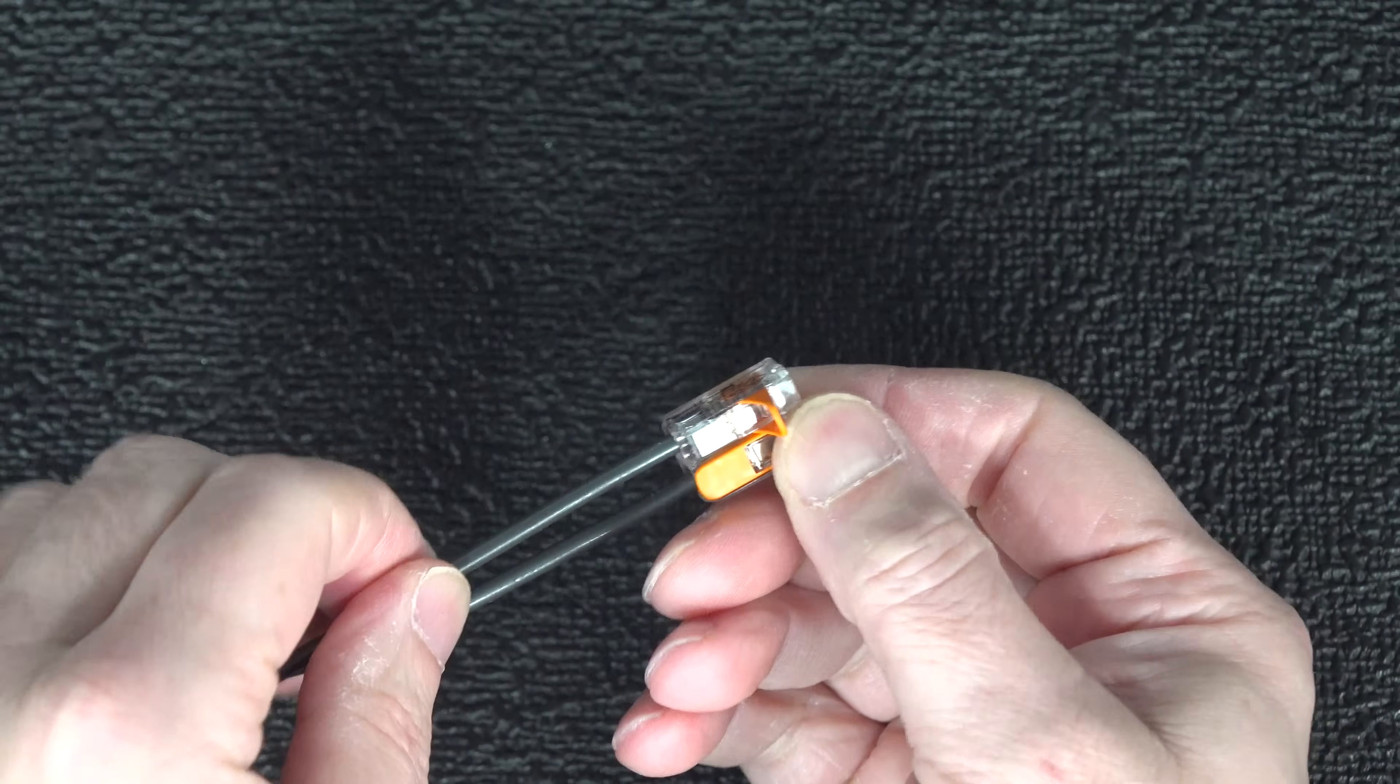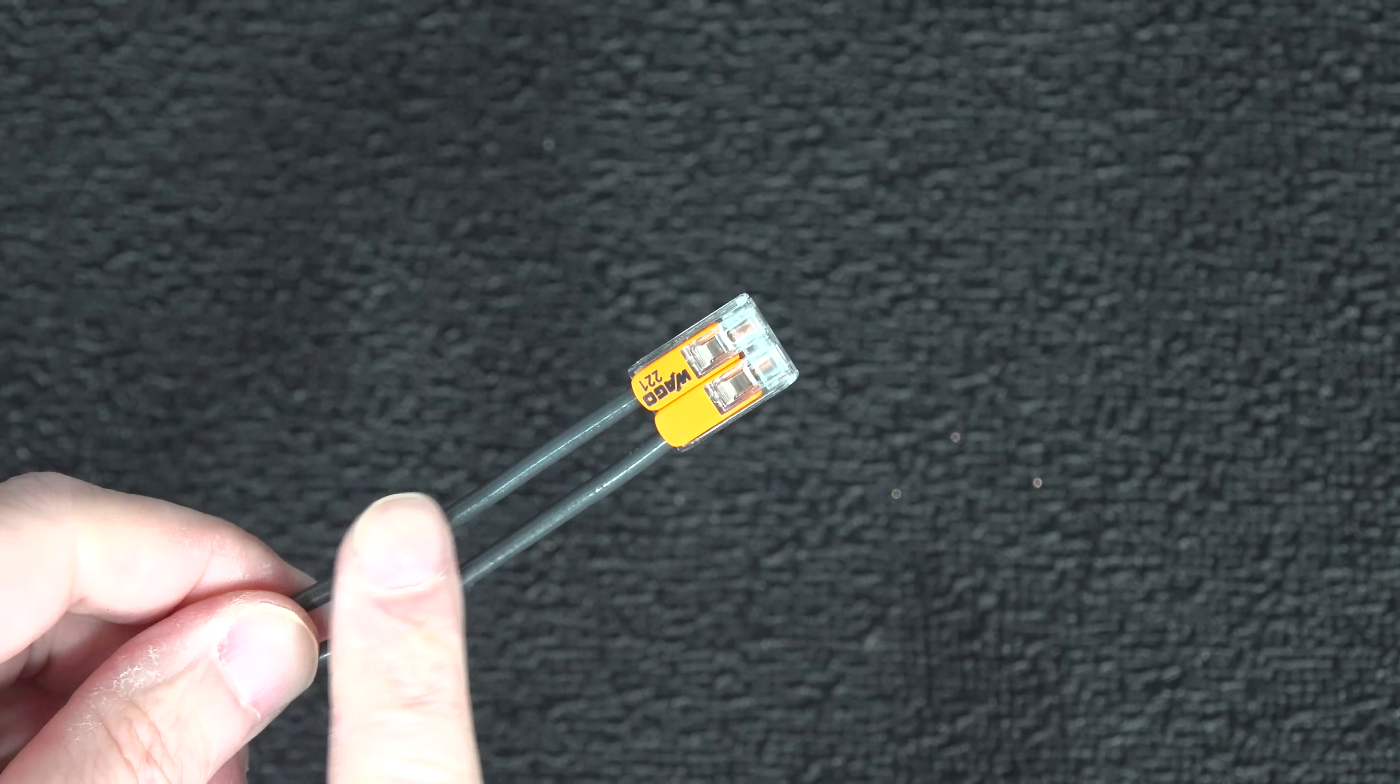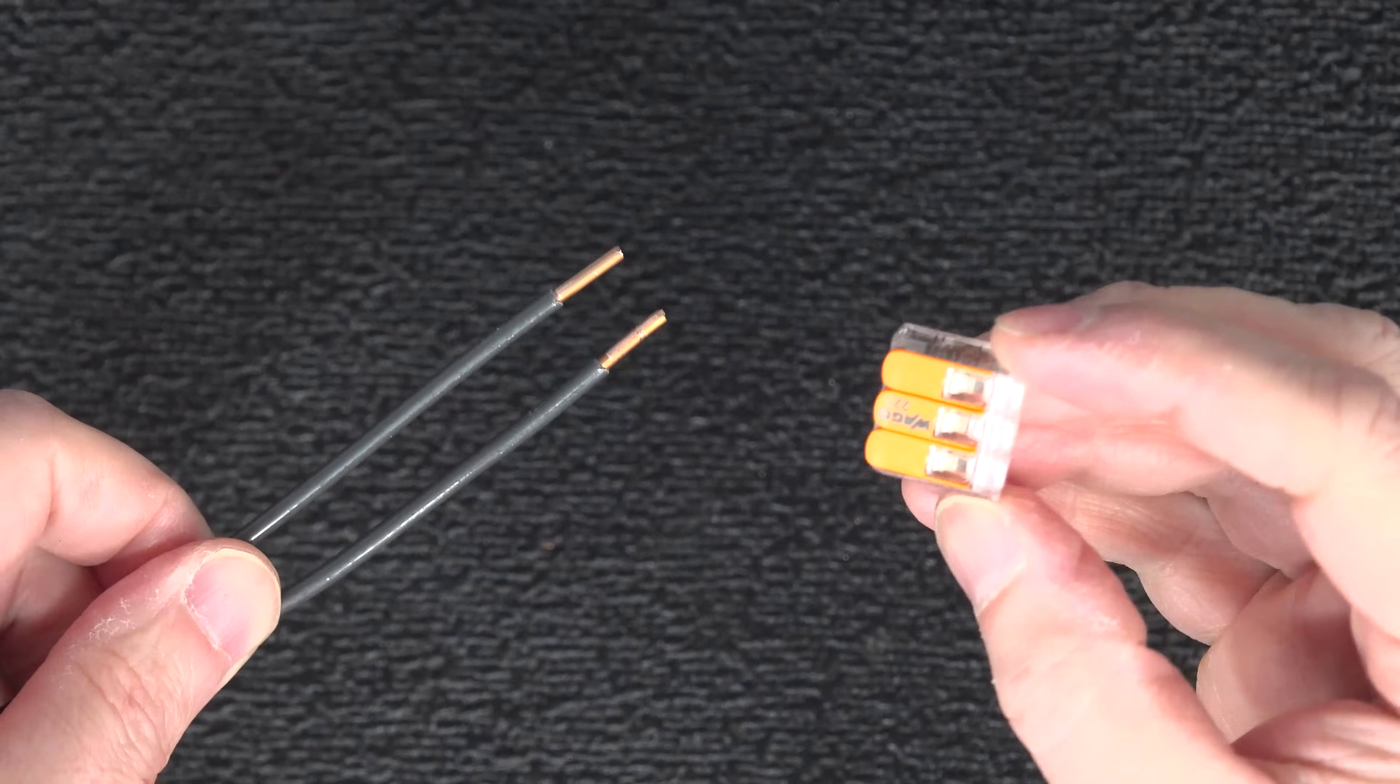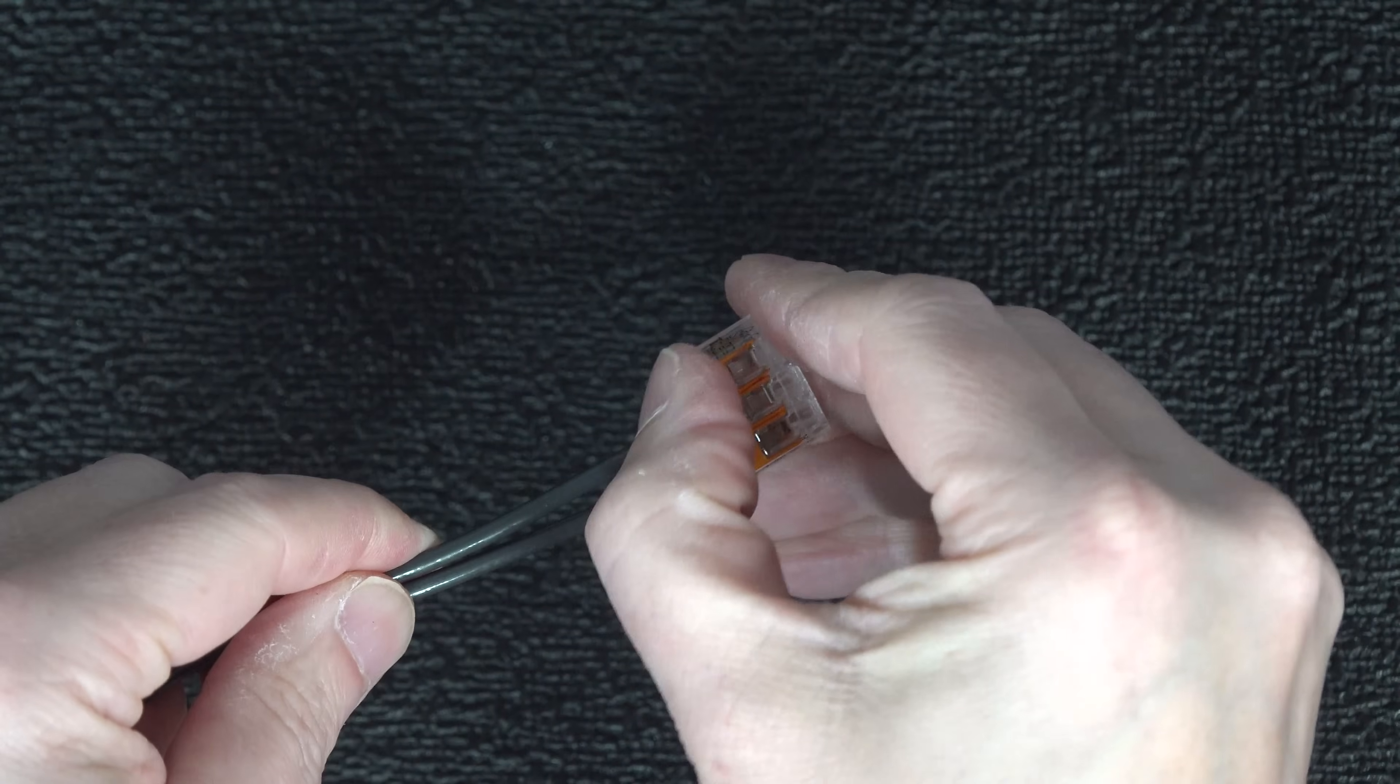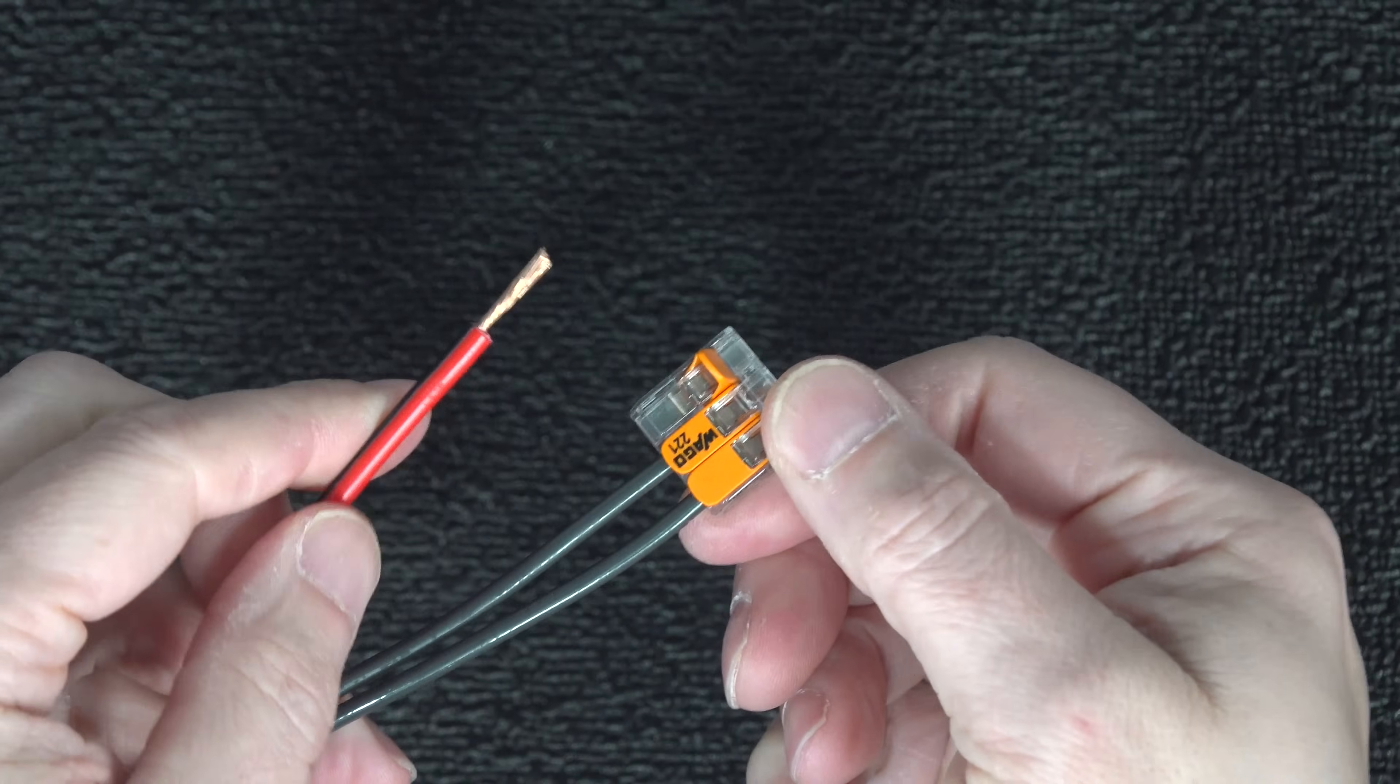And these aren't just for connecting up solid and stranded wire. You can just use them on solid wire alone, and that's a really popular reason people buy these. But if you need to connect up more than two wires together, they've also got a three conductor version and a five conductor as well. Anytime you use these Wegos, it's faster, it's easier, and if you're dealing with any type of stranded wire, there is simply no better way to get a good connection.